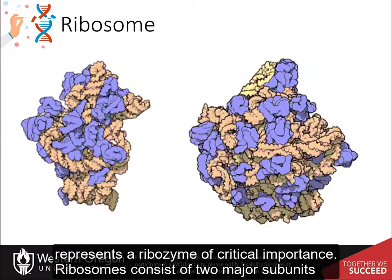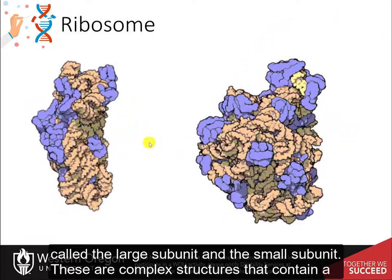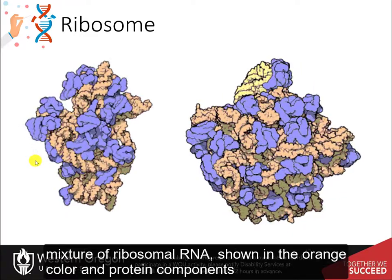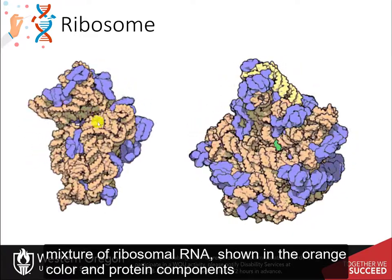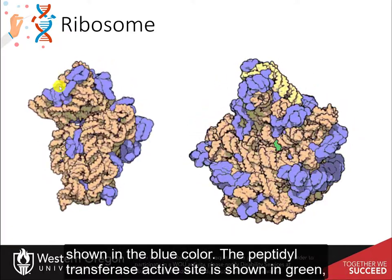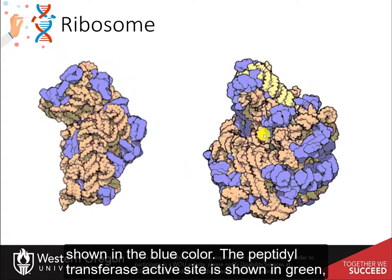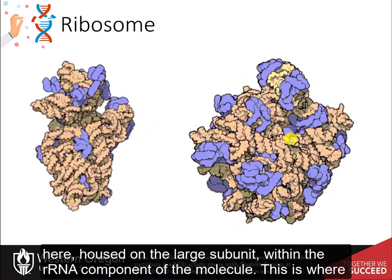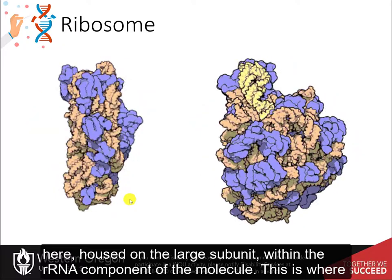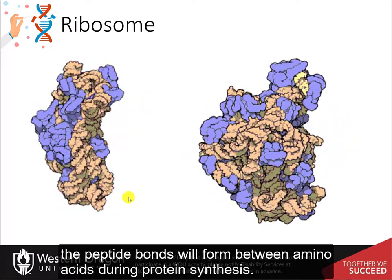Ribosomes consist of two major subunits called the large subunit and the small subunit. These are complex structures that contain a mixture of ribosomal RNA, shown in orange, and protein components, shown in blue. The peptidyl transferase active site, shown in green, is housed on the large subunit. Within the rRNA component of the molecule, this is where the peptide bond will form between amino acids during protein synthesis.